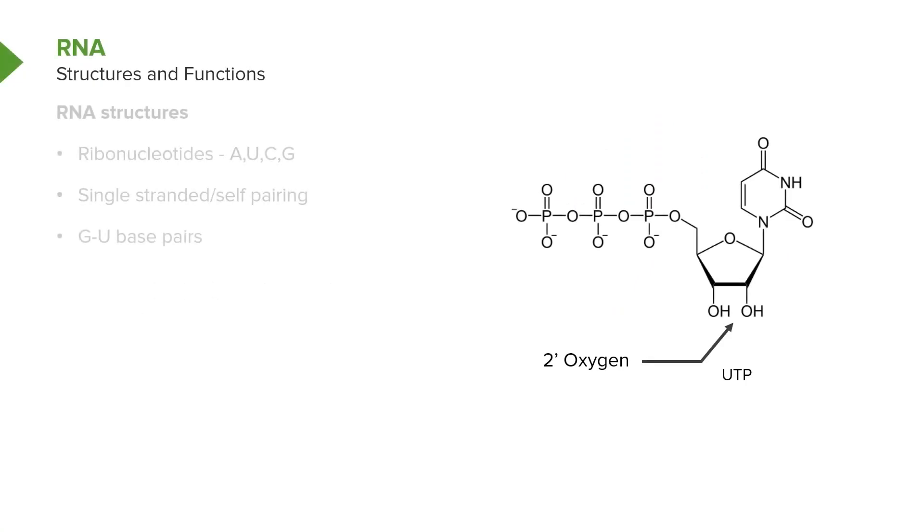Now, RNA, of course, has a structure that comes from the nucleotides comprising it, and the nucleotides are ribonucleotides: A, U, C, and G.